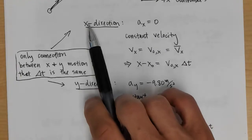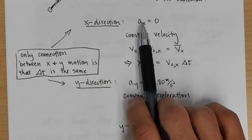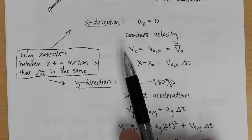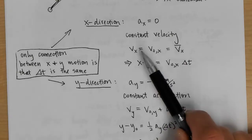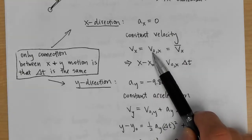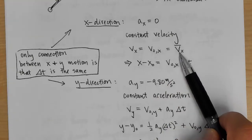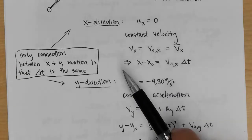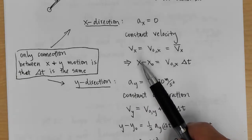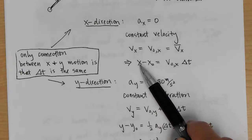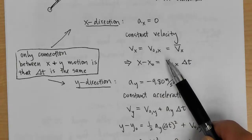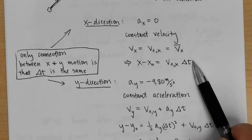In the x direction, we have no acceleration, so we have constant velocity. The equation we use: dx is equal to the initial velocity v₀x, which also equals the average velocity in the x direction. So we have x minus x₀ equals v₀x times Δt.